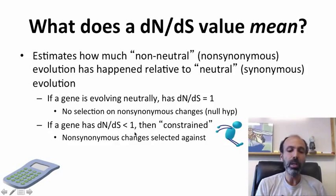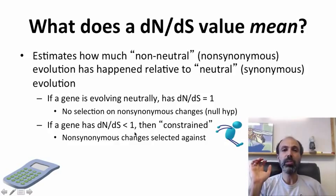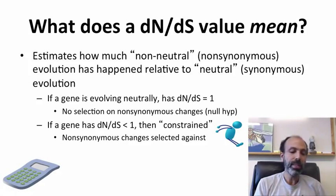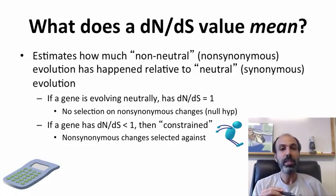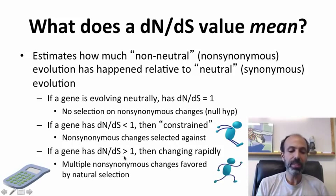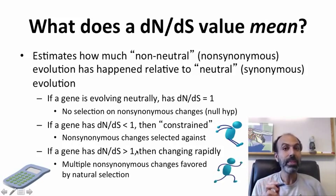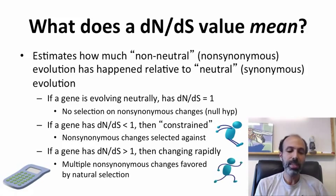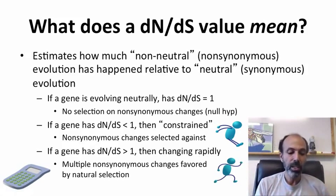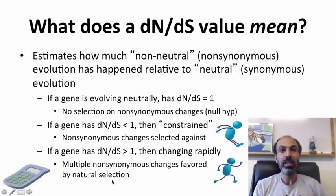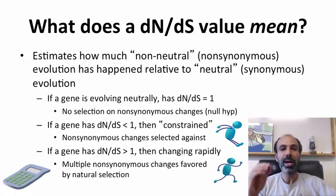Another possibility is dN/dS well below 1, meaning changes have been constrained — most non-synonymous changes that arise have been selected against. This is very typical, as with the flu virus example. You can also have dN/dS greater than 1, which is less common but quite interesting. In this case you're having very rapid changes — within a single gene, multiple non-synonymous changes favored by natural selection. That is very strongly indicative of strong recurrent positive selection.